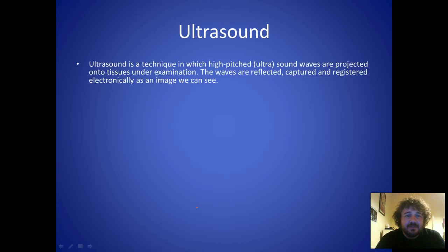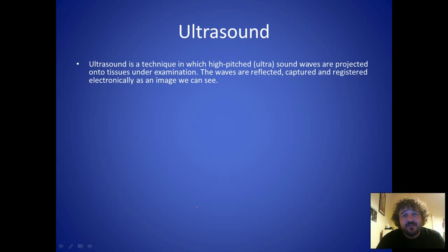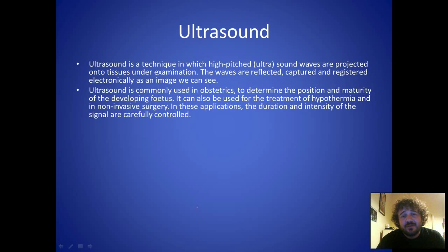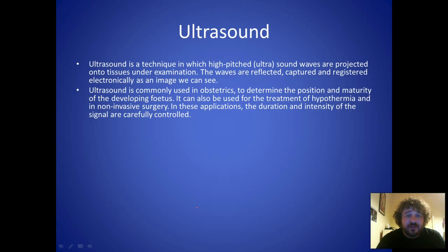Ultrasound uses super high-pitched sound waves projected into tissues. They work because they bounce back off different tissues, and from the time it takes for them to return, we can tell how far away structures are and build up an image using mathematics. It's commonly used in obstetrics — care of pregnant women — allowing us to determine a great deal about the fetus, such as developmental rate, age, and conditions like Down syndrome.